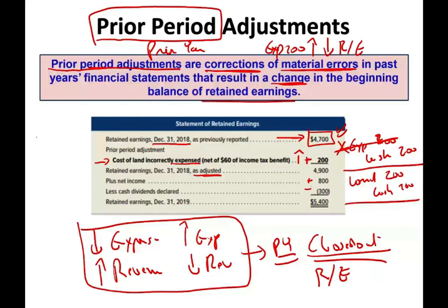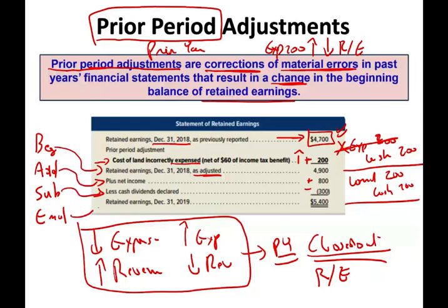Retained earnings follow the acronym BASE: B is the Beginning, A is the Addition, S is the Subtraction, and E is the Ending. Beginning, plus additions, minus subtractions, equals ending. Follow this BASE acronym — hopefully it will help you remember what the Statement of Retained Earnings looks like. It's a very important statement as you will see later in your accounting studies, so don't underestimate understanding this concept.